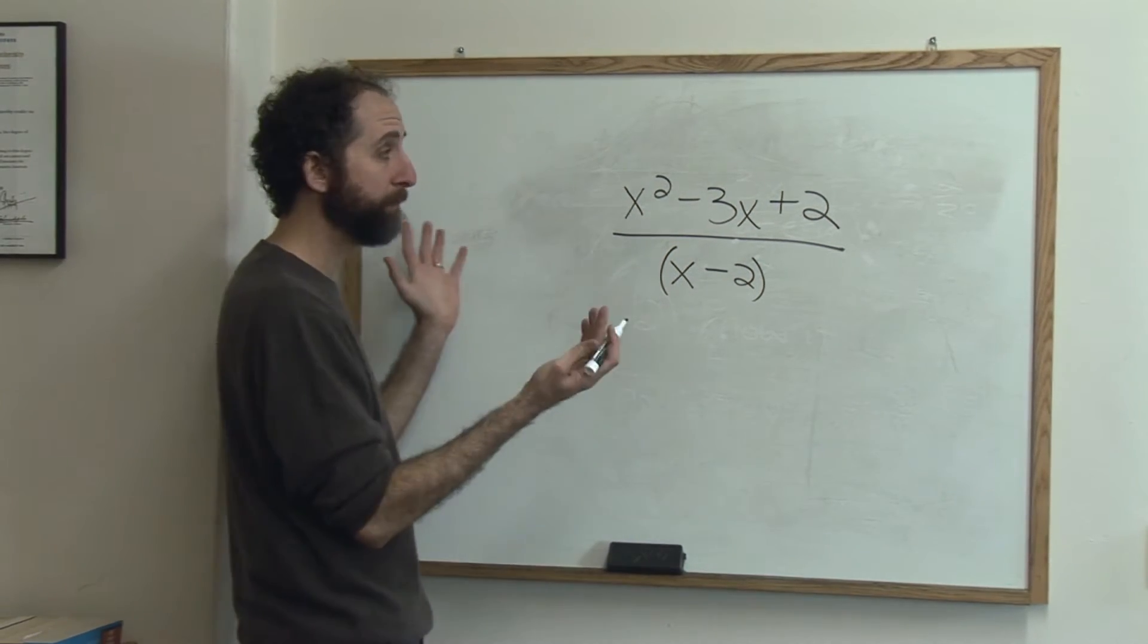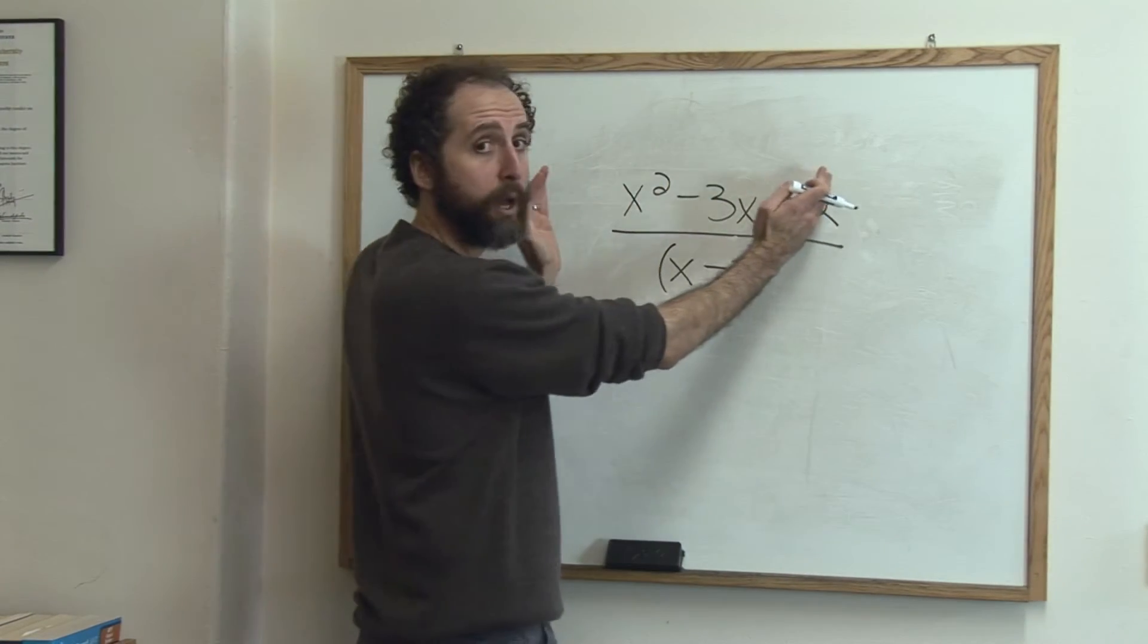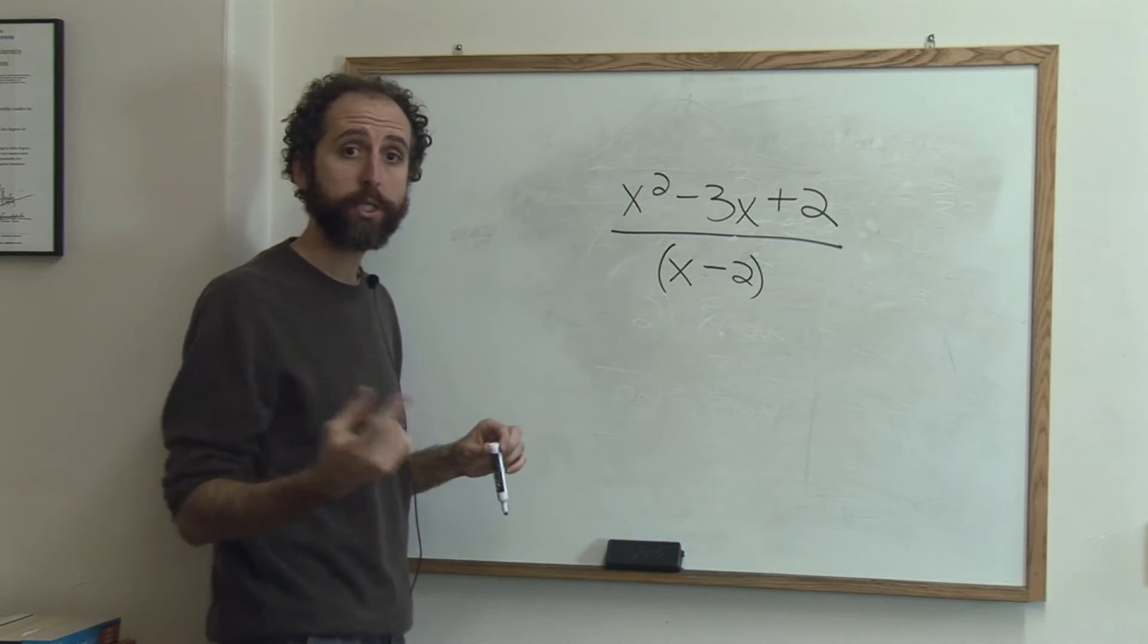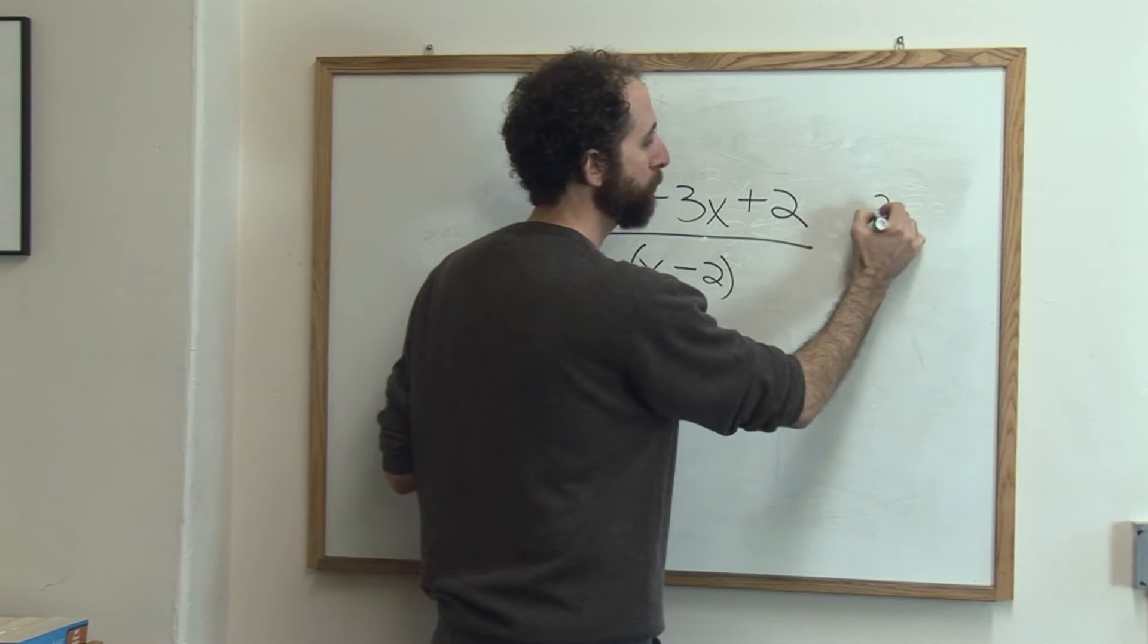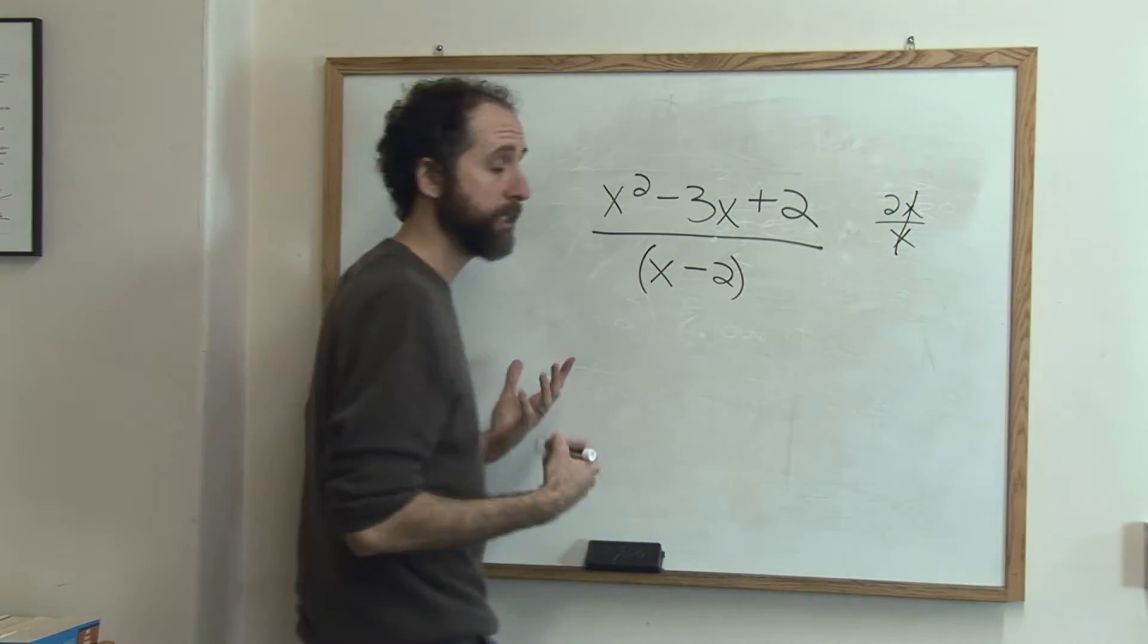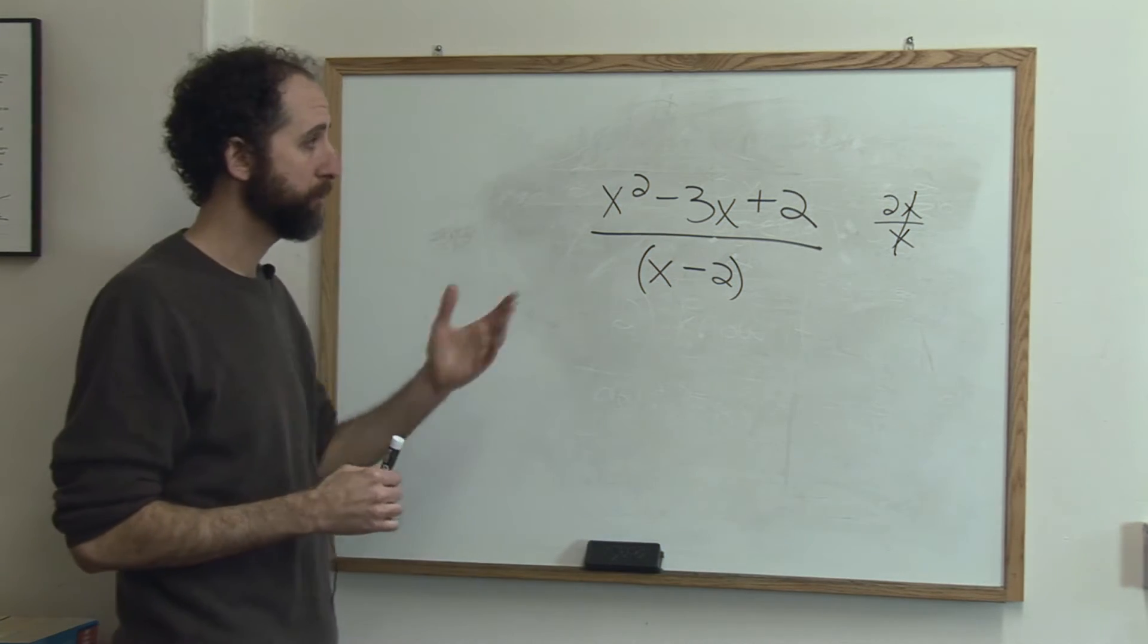So if we want to simplify this expression, the key is we're going to factor this top part and see if we can cross-cancel something, just like simplifying a fraction. Like if we had 2x over x, you cancel out the x's—that's simplifying that fraction and it would become 2. Same thing here.